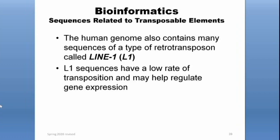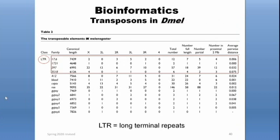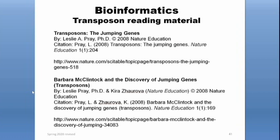The human genome also contains many sequences of a retrotransposon called LINEs. LINEs are generally really long, have a low rate of transposition, and may even help regulate gene expression in humans. Transposons also exist in Drosophila — here's a table of different Drosophila transposons. For example, the 412 transposon and the copia transposons, when they jump into your gene, can actually cause a phenotype.